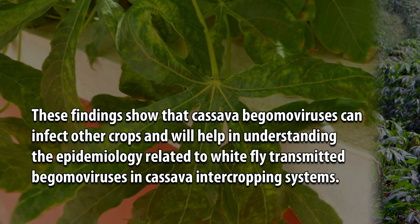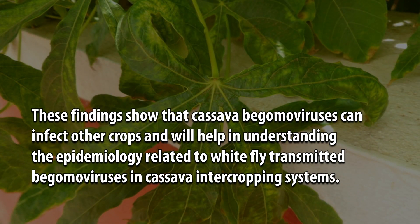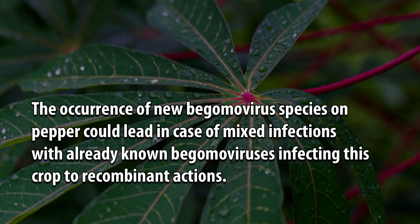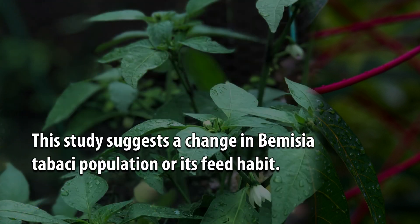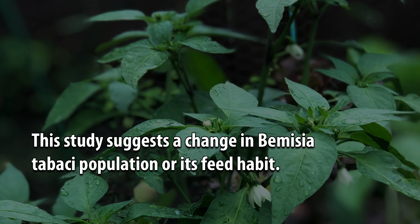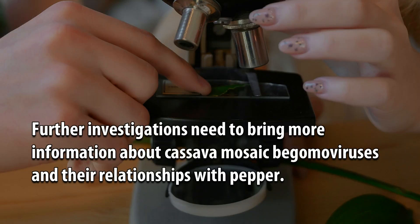These findings show that cassava begamoviruses can infect other crops and will help in understanding the epidemiology related to whitefly-transmitted begamoviruses in cassava intercropping systems. The occurrence of new begamovirus species on pepper could lead, in case of mixed infections with already known begamoviruses infecting this crop, to recombination. This study also suggests a change in Bemisia tabaci population or its feeding habits. Further investigations are needed to bring more information about cassava mosaic begamoviruses and their relationships with pepper.